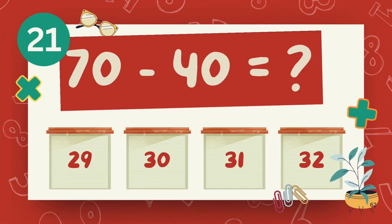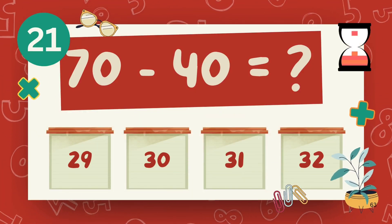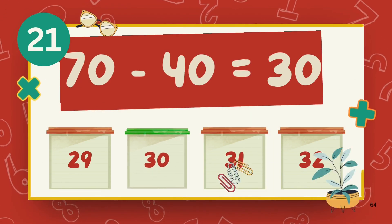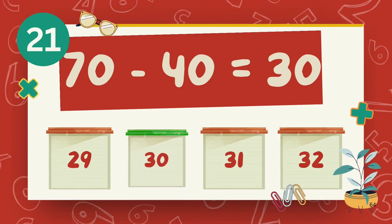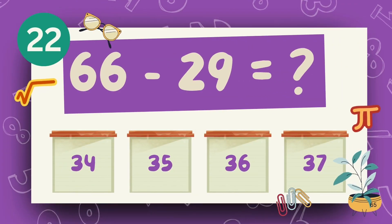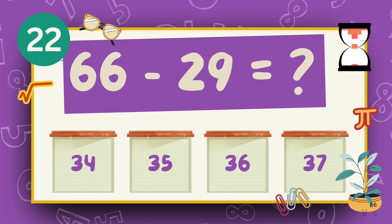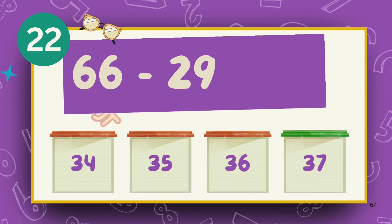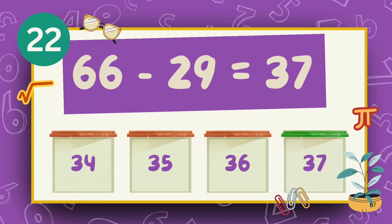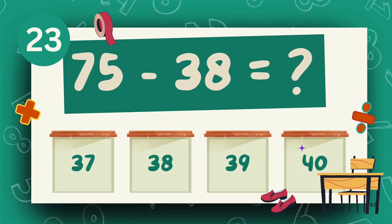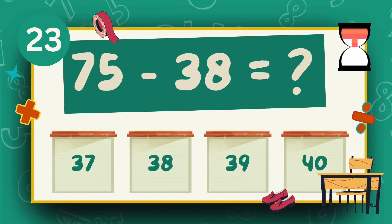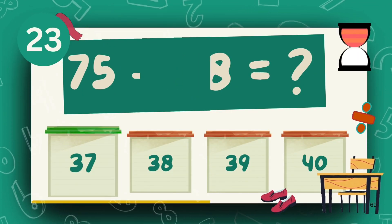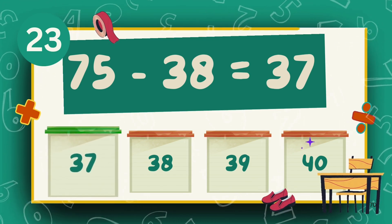What is 70 minus 40? The answer is 28. What is 75 minus 38? The answer is 37.